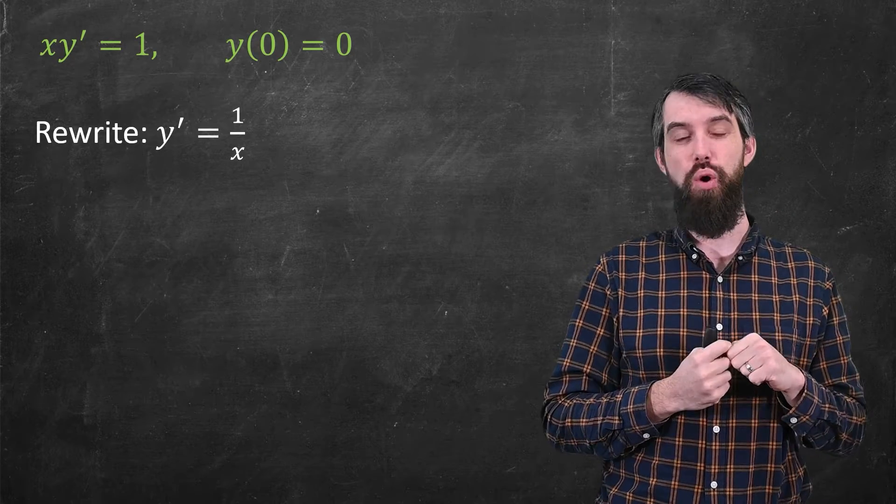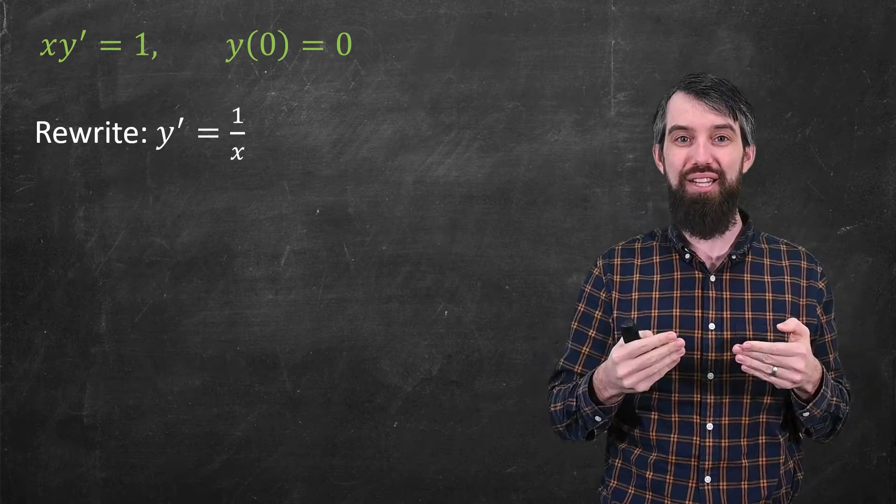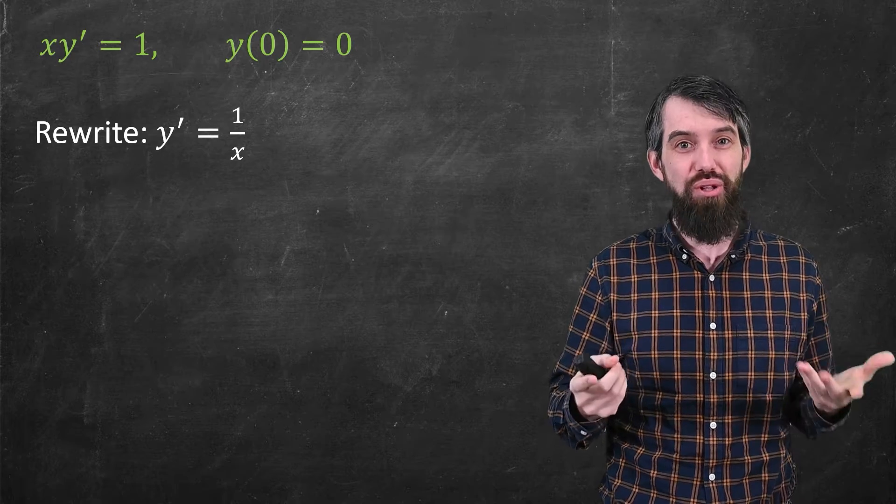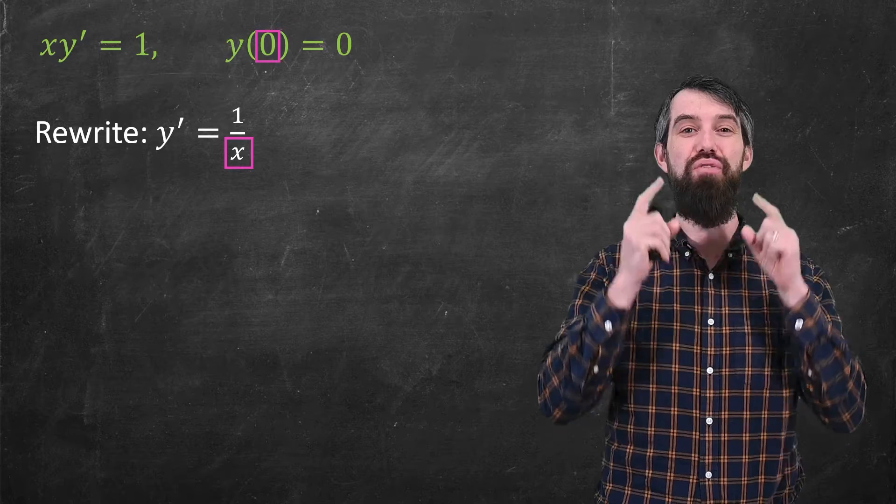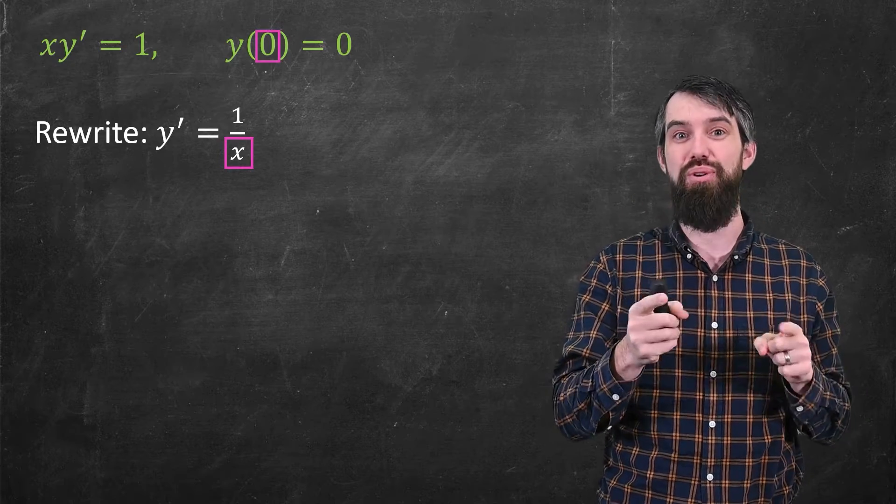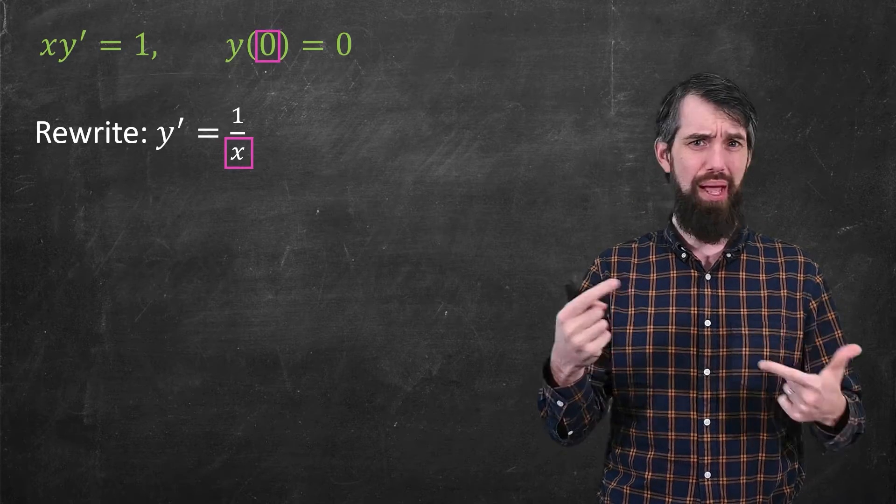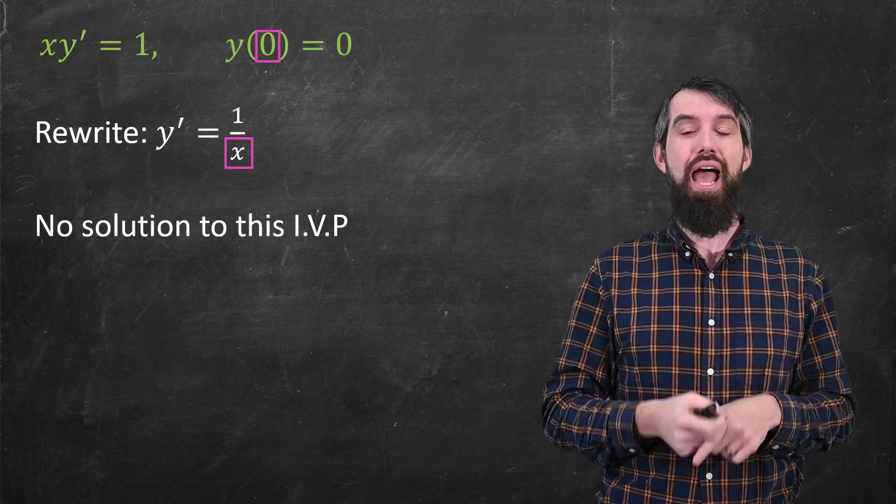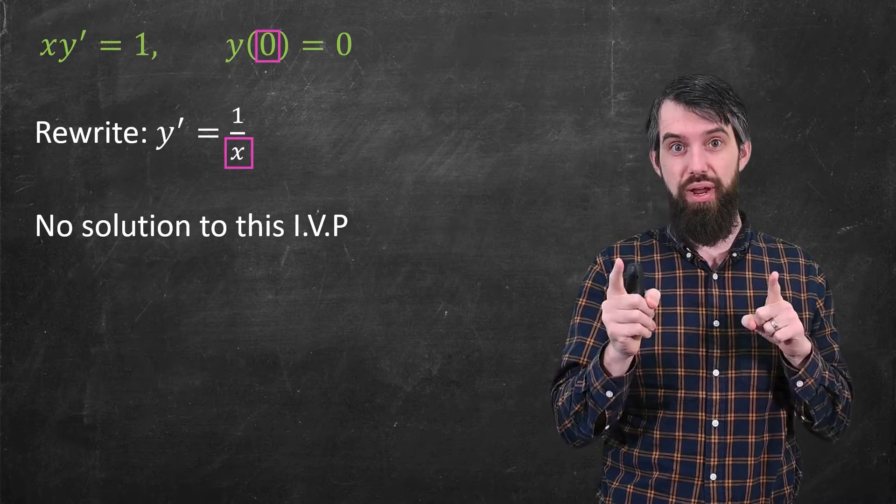And now I bet your alarm bell is going off. Because whenever you see 1/x, you think this isn't defined at x = 0. And indeed, our initial condition was y(0), that's x = 0, is equal to 0. And so if you plug in 0 here, this would be undefined. And so indeed, we're going to have no solution to this particular initial value problem.